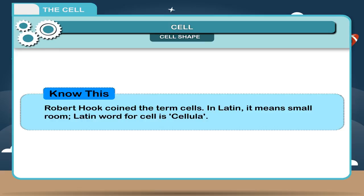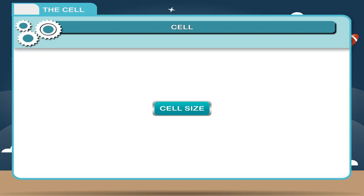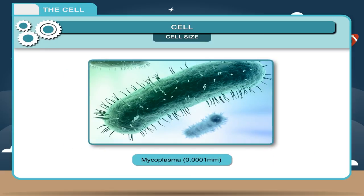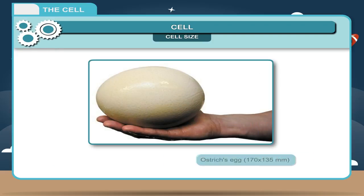Cell size. The size of cells varies in different organisms. The smallest cells are of mycoplasma, 0.0001 millimeter, while the largest animal cell is of ostrich egg, measures about 170 by 135 millimeter.